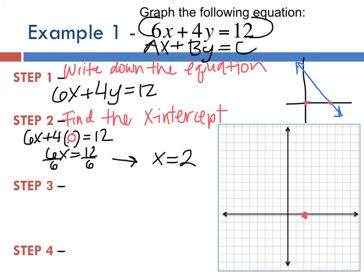The third step is find the y-intercept. How do you think we're going to do that? To find the y-intercept, we want to find the point where the line crosses the y-axis, and just like the x-intercept, you want to find where x = 0. Plug in 0 for x: 6(0) + 4y = 12.